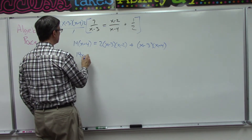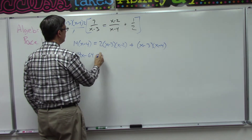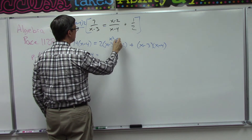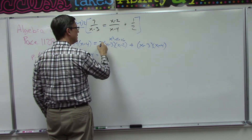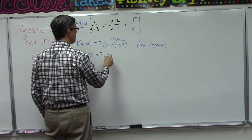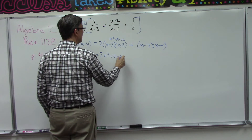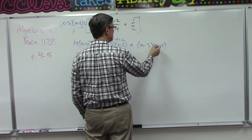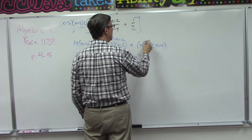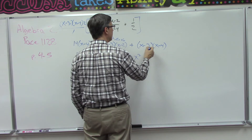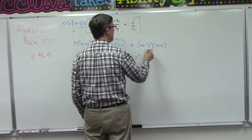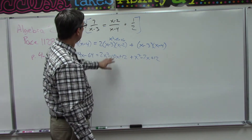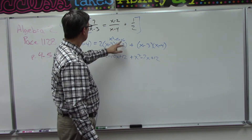Now I'm going to distribute and get 14x minus 64. The second term is going to give me x squared minus 5x plus 6, but we'll distribute the 2 to get 2x squared minus 10x plus 12. Over here the x squared term, then the outer is negative 4x, the inner is negative 3x which gives negative 7x, and then negative 3 times negative 4 is positive 12. Let me just make sure — positive 6... yeah, okay.